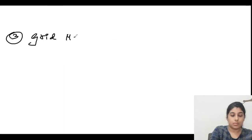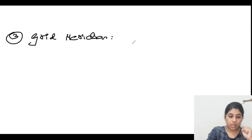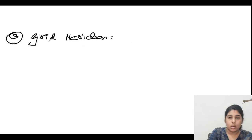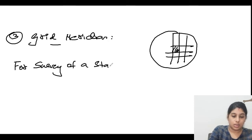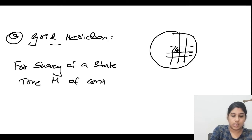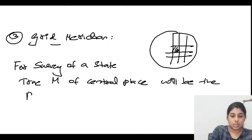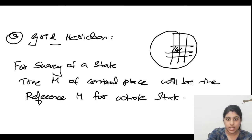The next type is grid meridian. Grid meridian is used for the survey of a state. The true meridian of the central place is taken as the reference meridian for the whole state. So if we want to consider a particular state, we refer to this grid meridian — the true meridian of the central place becomes the reference for that entire state.